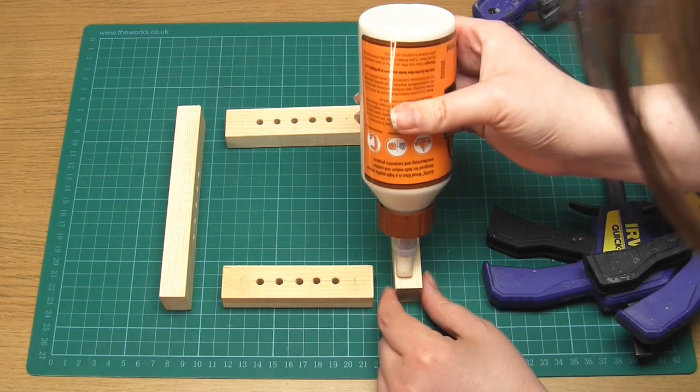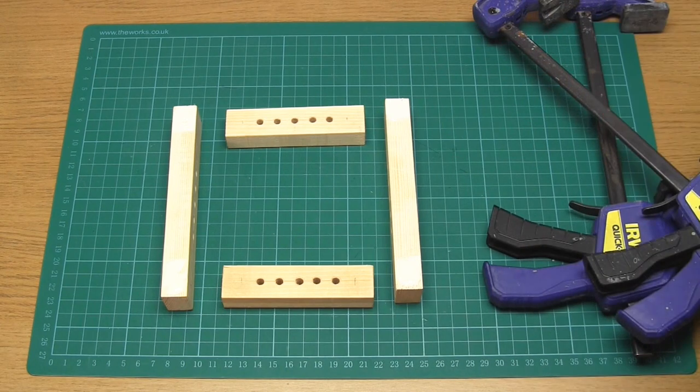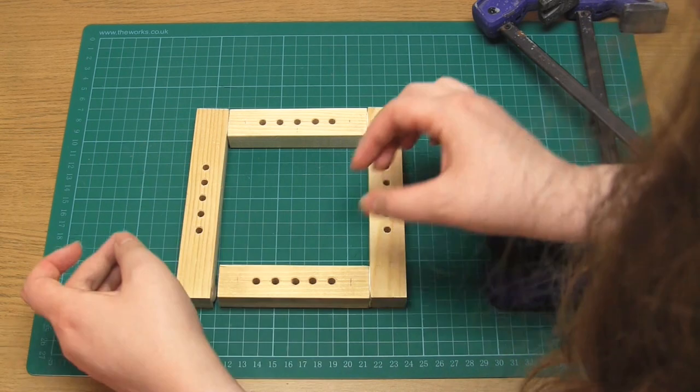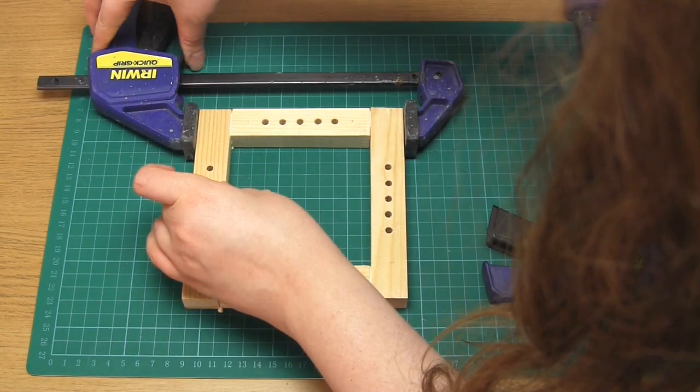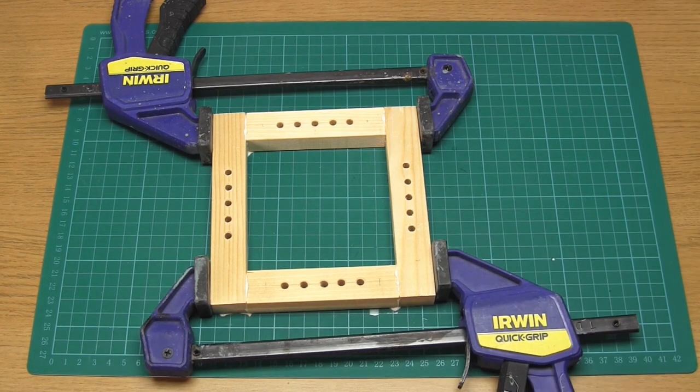I then just used Gorilla wood glue and some clamps to attach them together like so. These came together to make a one inch wide frame that has a four by four inch gap in the center.